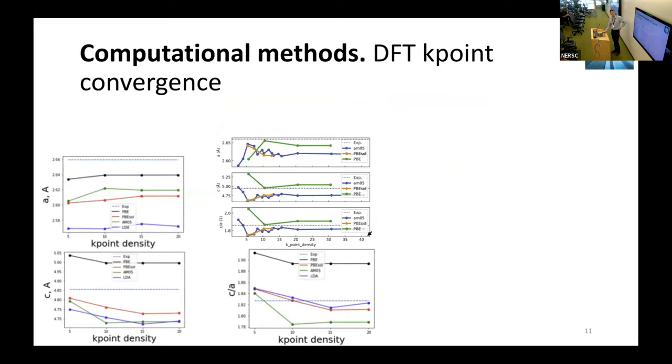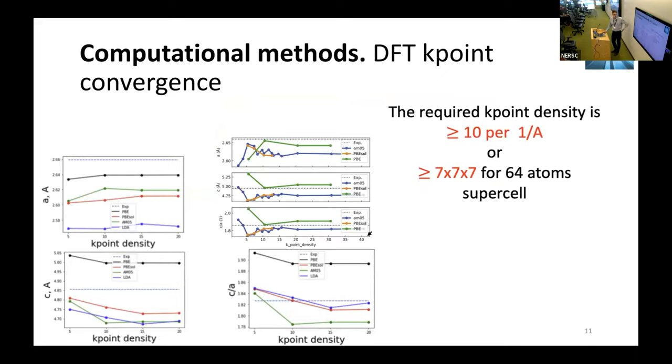Finally, how do we support our calculations with NERSC resources? We mainly do VASP calculations, mainly density functional theory calculations. For zinc it required a really high density, more than 10 per inverse angstrom or 7x7 for 64 atom supercell. MPI CPU takes too long or too many nodes to compute, so it's great that we have NERSC and GPU DFT calculations that greatly reduce this cost.